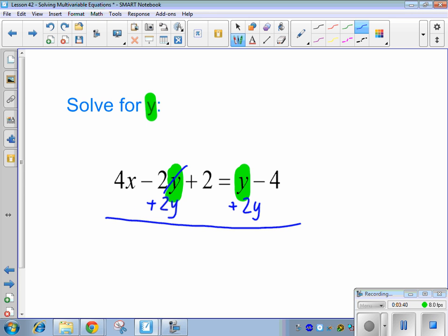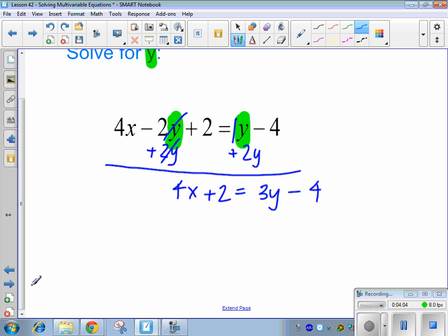So this is going to get rid of my y's on this side. I'm going to be left with 4x plus 2 equals, this is really 1y, right? So 1y plus 2y gives me 3y minus 4. Now I have my y's on one side, but I need everything that does not have a y on the other side. So what's my next step? Which thing does not belong? The negative 4.